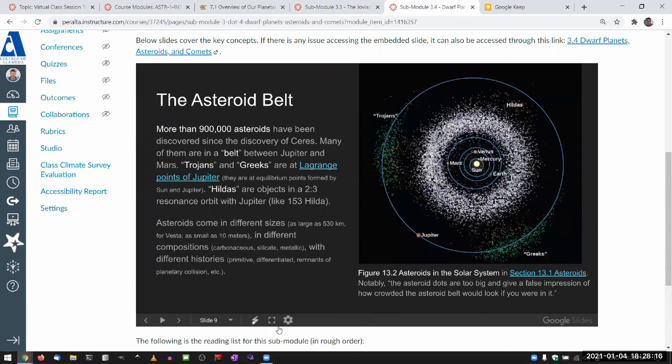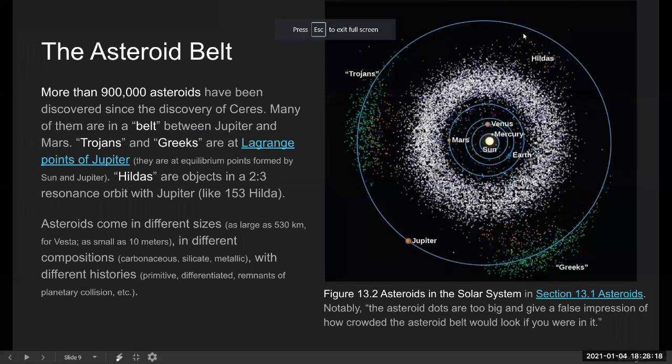In the asteroid belt, these features, the groupings of asteroids, Trojans and Greeks, are maintained by Jupiter. Trojans and Greeks are at the Lagrange points of Jupiter and the sun, and the Hildas are in an orbital resonance, 2 to 3 resonance orbit with Jupiter.